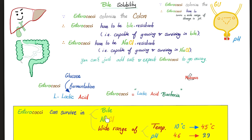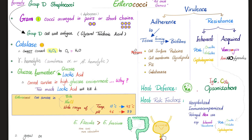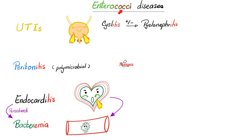Enterococcus can grow in anything — in bile, in salt, in a wide range of temperatures and pH variations. Enterococcus can lead to GI and GU problems, urinary tract infections, and endocarditis. They are inherently resistant to penicillin — such as oxacillin and nafcillin — and to cephalosporins. Moreover, some strains acquired further resistance against vancomycin — we call this vancomycin-resistant enterococci (VRE). Diseases caused by enterococci include problems in the gut and peritoneum, the urinary tract, the endocardium, and bacteremia.